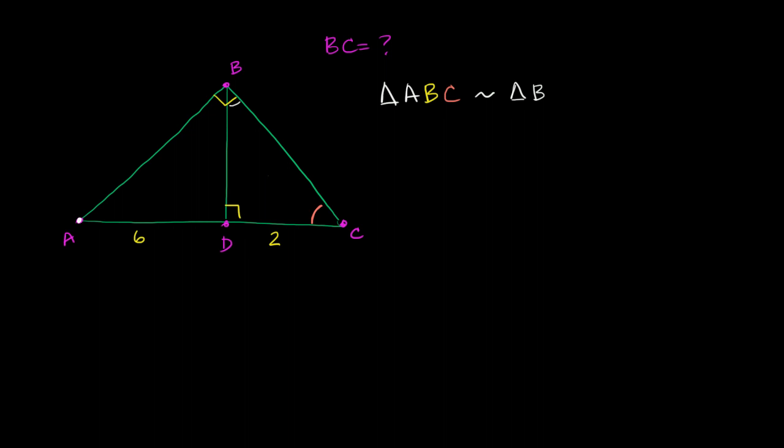Then we're going to go to the right angle. The right angle is vertex D. And then we go to vertex C, which is in orange. So we have shown that they are similar.